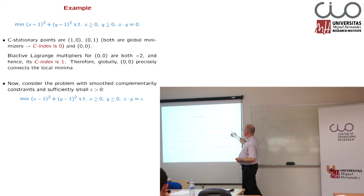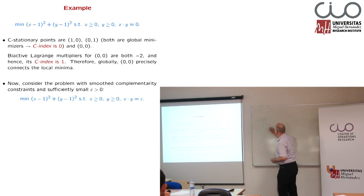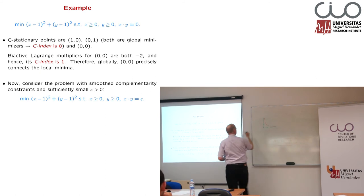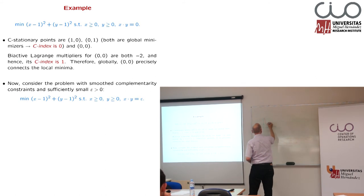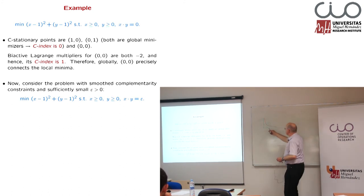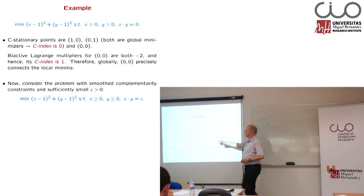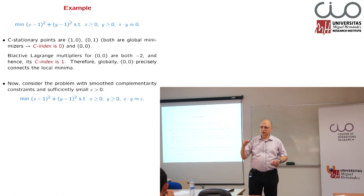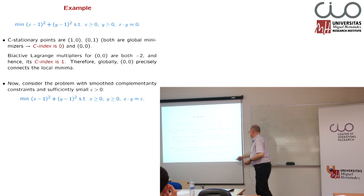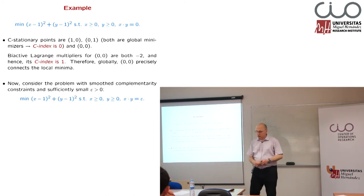Starting with the green ones: one is at (1,0), one is at (0,1), and the third is at (0,0). So we have one, zero; zero, one — both are global minimizers. These are the level sets — we have two minimizers, and one point with C-index equal to one. Remember, the C-index was the sum of two things: the quadratic index and the bi-active index. Now we look at this perturbed problem and what we get.